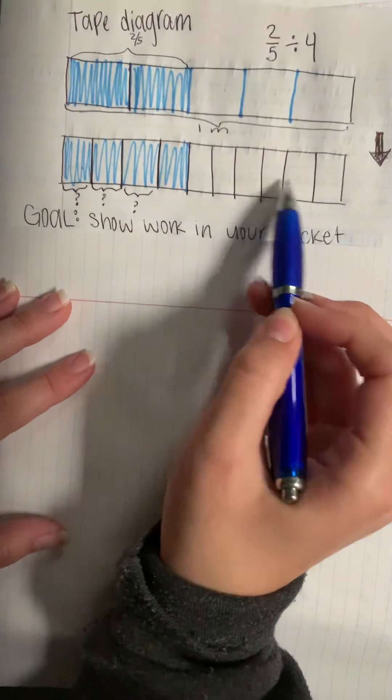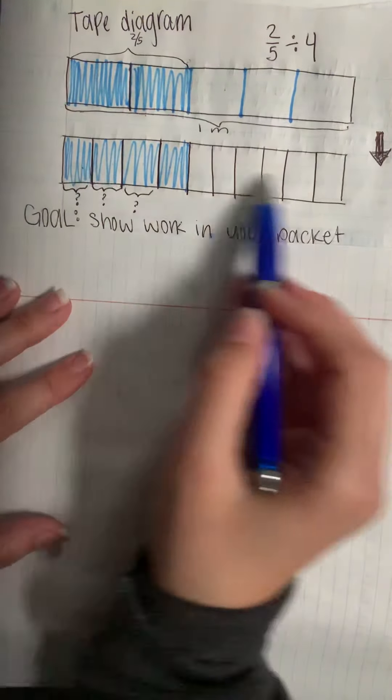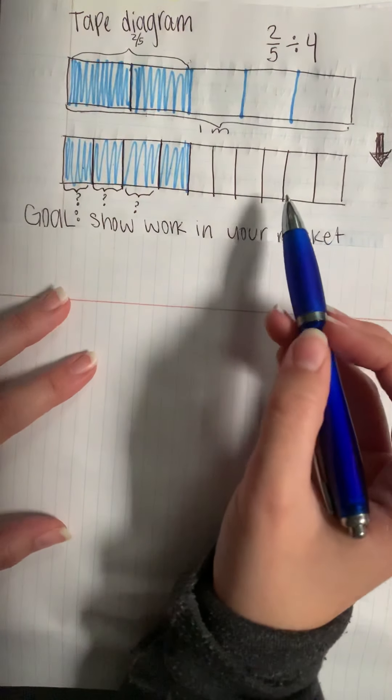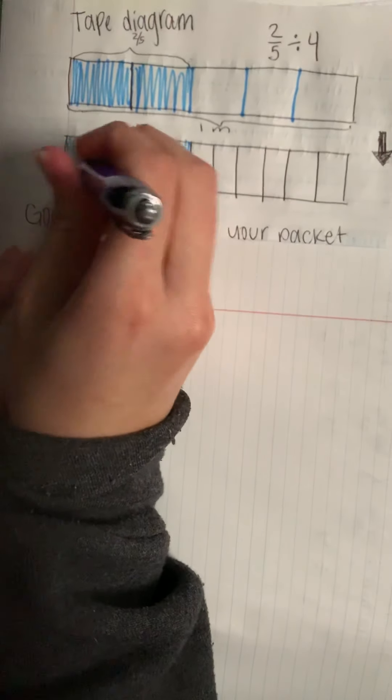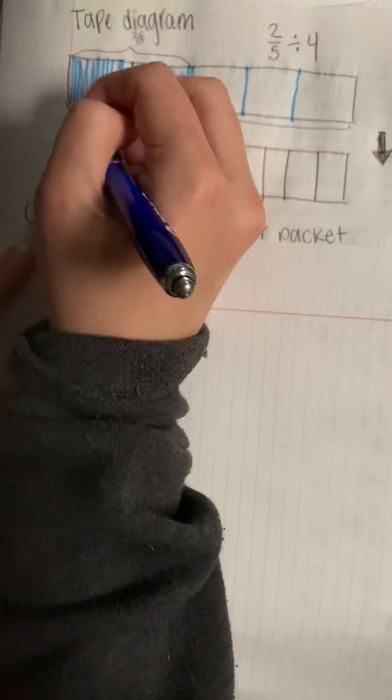One, two, three, four, five, six, seven, eight, nine, 10. So we're working out of tenths now. One of these pieces is one-tenth.